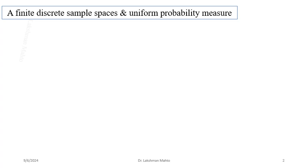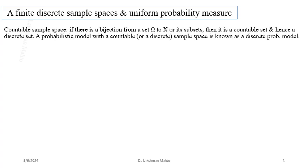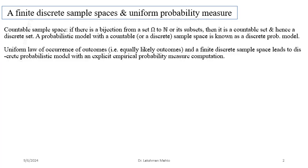We are coming up with a probability law of occurrence in a uniform way; another way we call it equally likely — everyone has an equal chance of occurring. Here we call it a countable sample space, meaning there is a bijection from the set of natural numbers to the sample space, and hence we call it a discrete probabilistic modeling. The law taken is uniform law of occurrence, meaning equally likely outcomes, and the sample space is finite discrete.